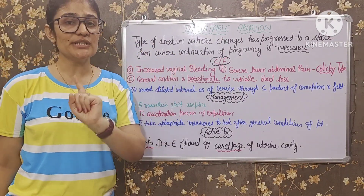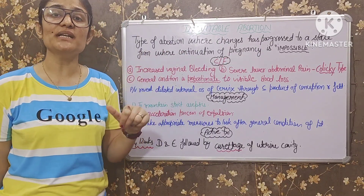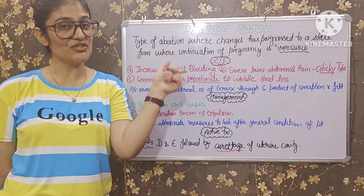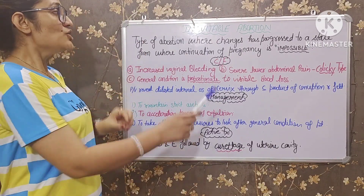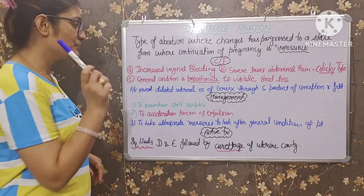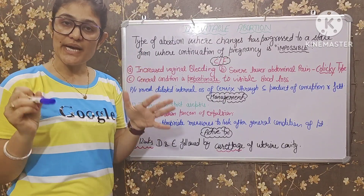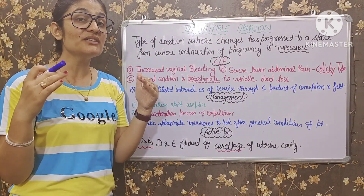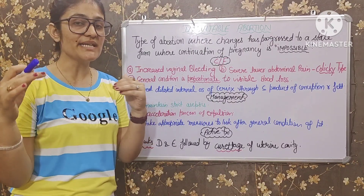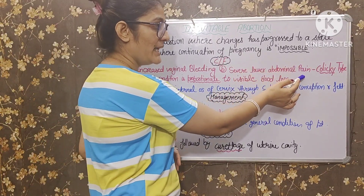Inevitable abortion ke clinical features kya hote hain? Number one: increased vaginal bleeding. Vaginal bleeding patient ko increase hoti rehti hai — start hoi vaginal bleeding aur bleeding badhti jayegi.